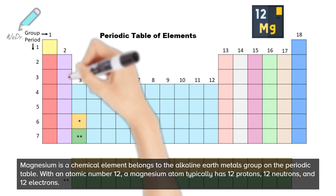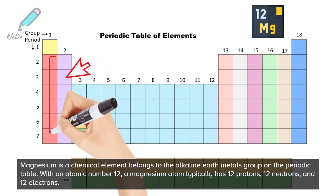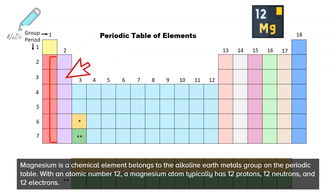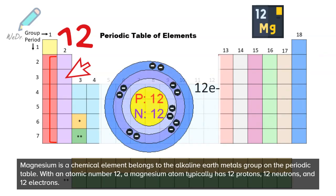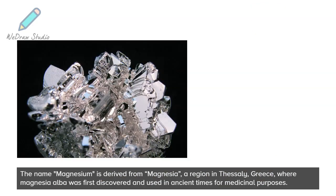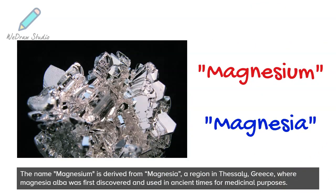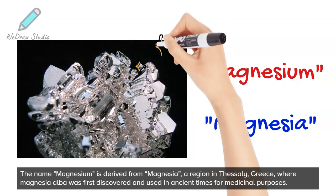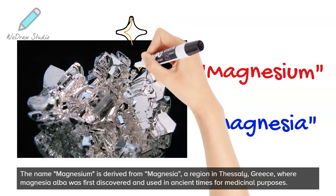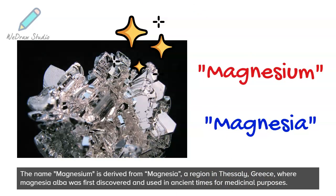Magnesium as a chemical element belongs to the alkaline earth metals group on the periodic table. With an atomic number 12, a magnesium atom typically has 12 protons, 12 neutrons, and 12 electrons. The name magnesium is derived from Magnesia, a region in Thessaly, Greece, where Magnesia Alba was first discovered and used in ancient times for medicinal purposes.